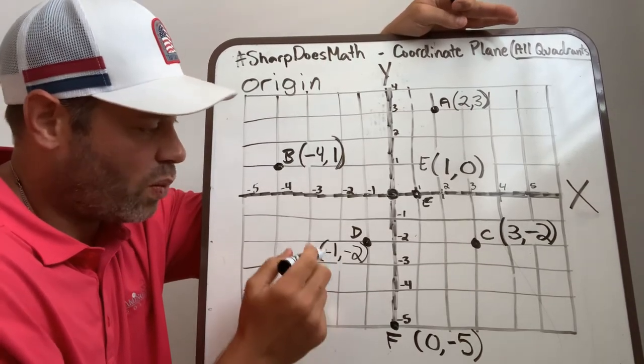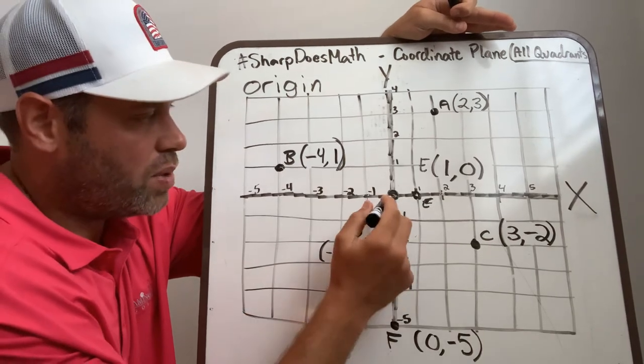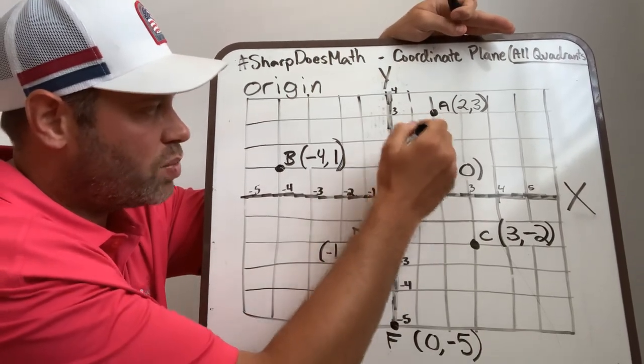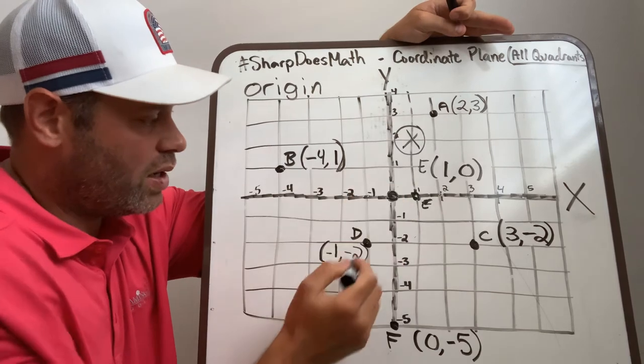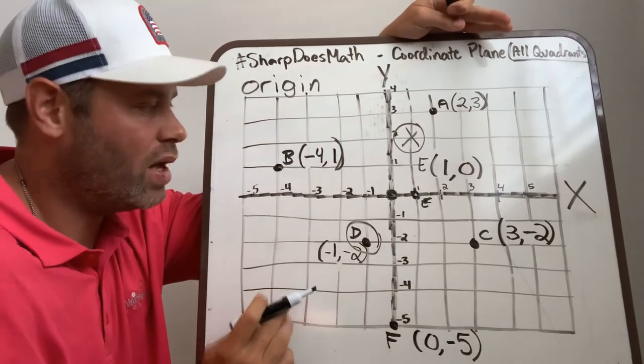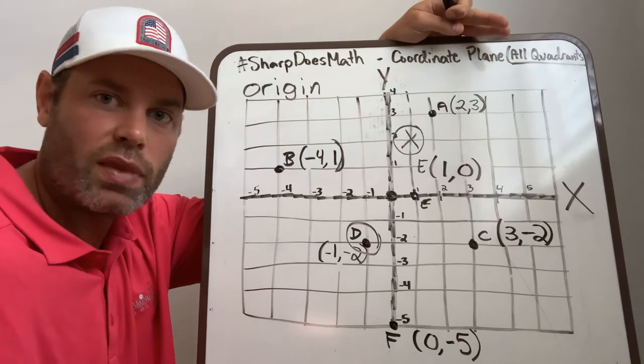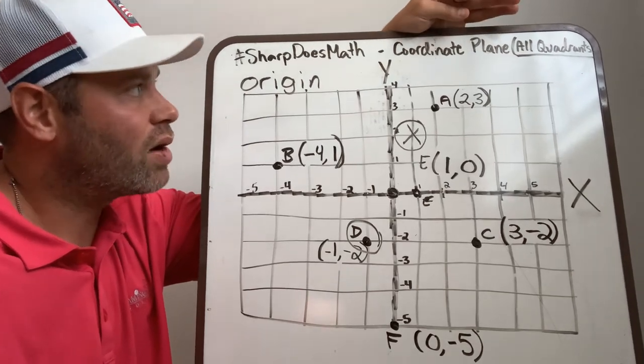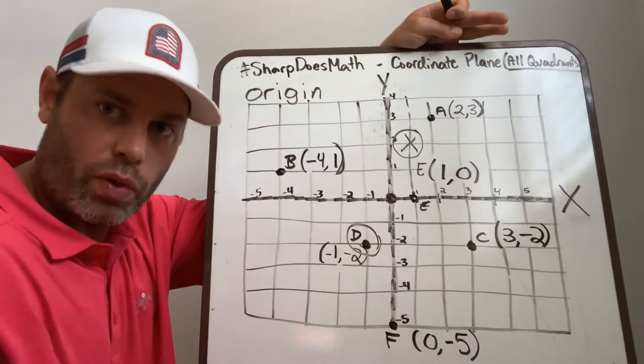You have to put the negative symbol. If you don't, if you just wrote 1, 2, that would be this point up here. That point is a lot different from that point, so it's really important that you have those negatives if you need them. That is a coordinate plane with all four quadrants.